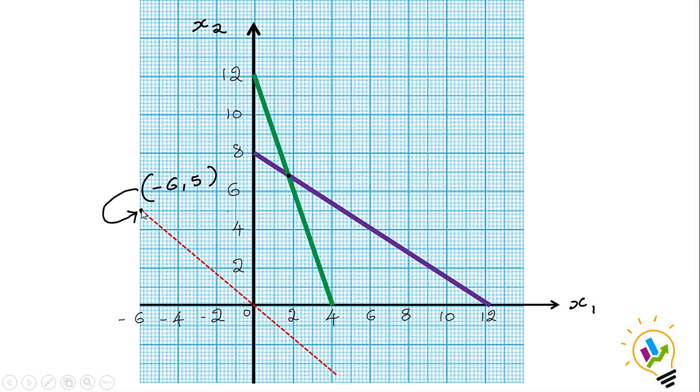We will plot this slope point on the graph paper. It is minus 6 by 5, which is the point (-6, 5). This is where the x-axis is minus 6 and y is 5. From this point to (0,0), draw a straight line and extend it. This is called the isoprofit line.